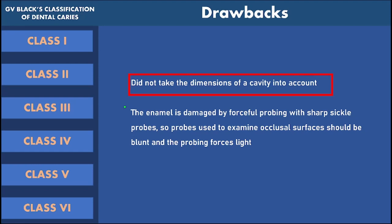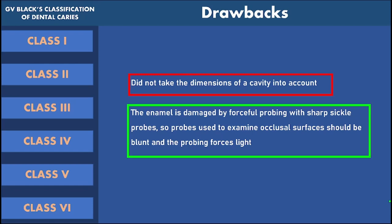Next, G.V. Black recommended the use of a sharp sickle probe and forceful probing into the surface for diagnosis of dental caries. But now we understand that the forceful application of pressure by a probe can lead to cavity formation in case of a non-cavitated lesion, so it is no more recommended. It is now recommended to use a smooth-ended probe like a CPITN probe and a gentle application of force for caries examination, rather than a forceful application with a sharp probe.